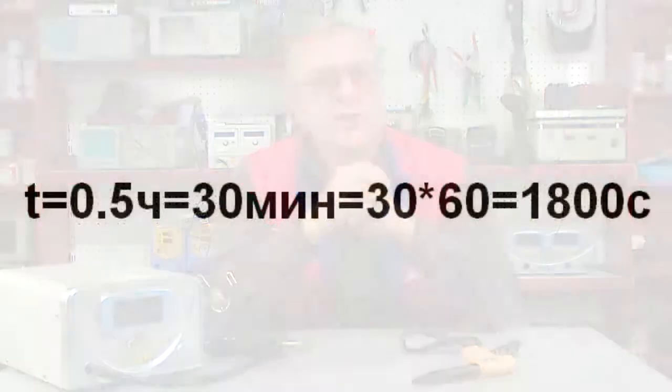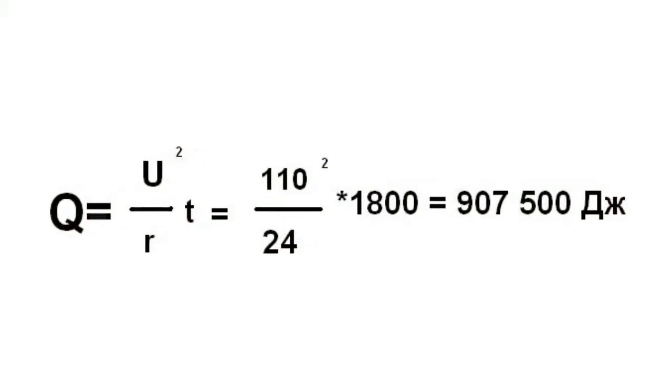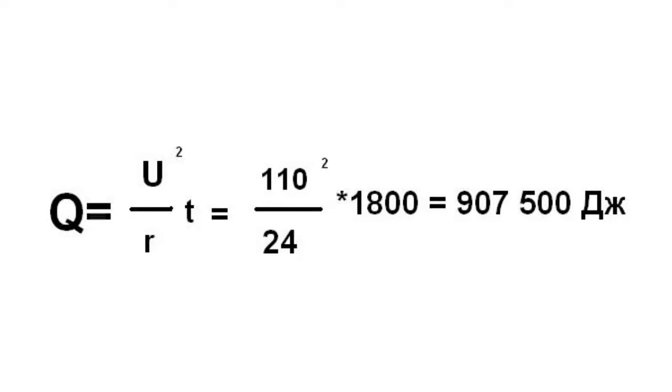This is the Joule-Lenz law. For example, we need to calculate the quantity of heat produced by a heating device over 30 minutes. The device is plugged into the mains at 100 volts, and its resistance is 24 ohms. The time in seconds equals 1800 seconds. The voltage squared divided by the resistance and multiplied by time gives us a quantity of heat equal to 907,500 joules.